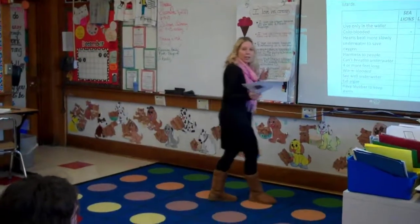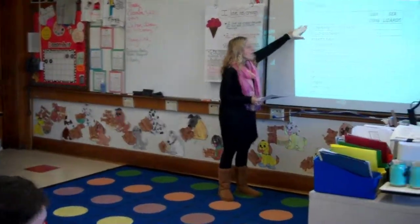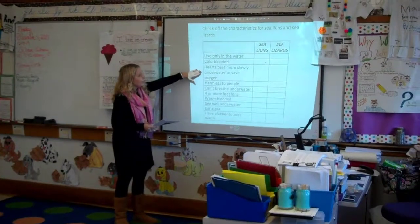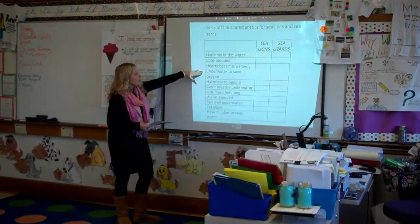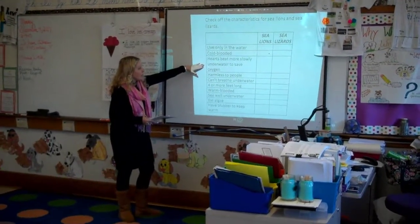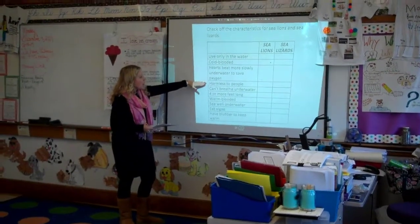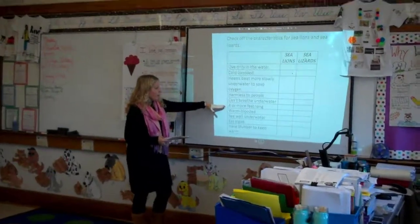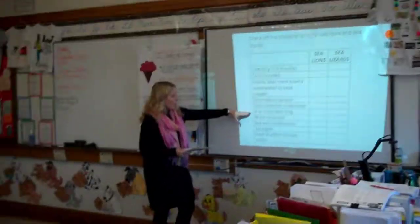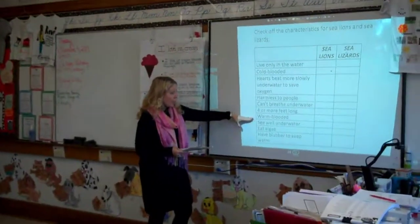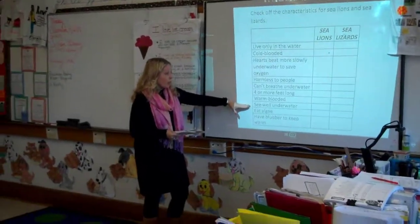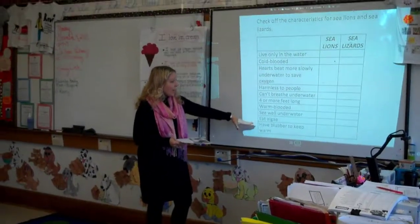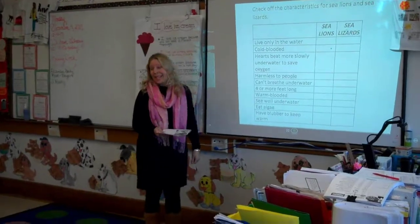So if you look at your paper, you can read along with me: live only in the water, cold-blooded, hearts beat more slowly underwater to save oxygen, harmless to people, can't breathe underwater, four or more feet long, warm-blooded, see well underwater, eat algae, and have blubber to keep warm.